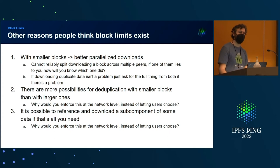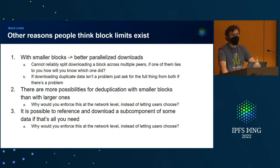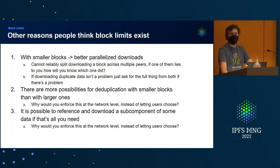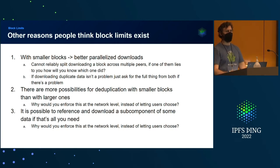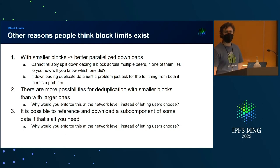Block limits have been a thorn in the IPFS ecosystem for a while, and this has led to people thinking of other reasons why block limits exist. One reason people cite: with smaller blocks, I can have better parallelized downloads. That's true, but why would you enforce that at the protocol layer instead of letting users choose? It feels weird for the ethos of the people here to hard-code a limit that says this will be good for your performance. Also, you still have the problem of downloading duplicate data.